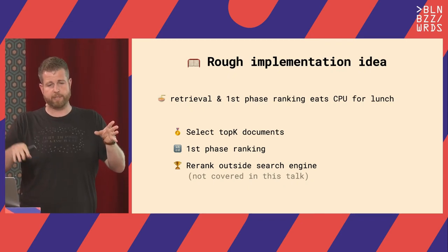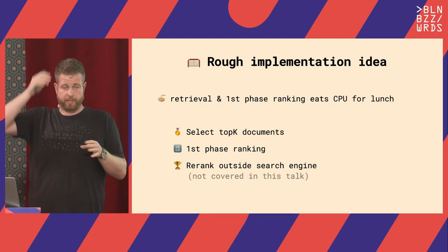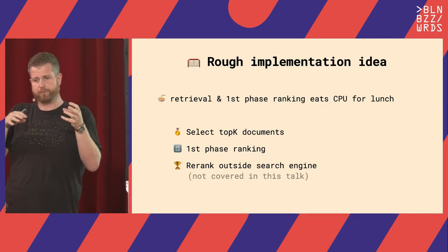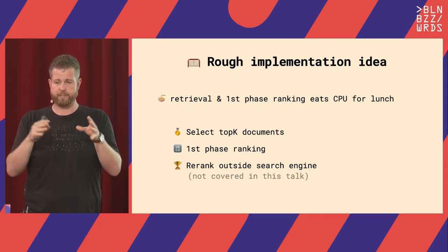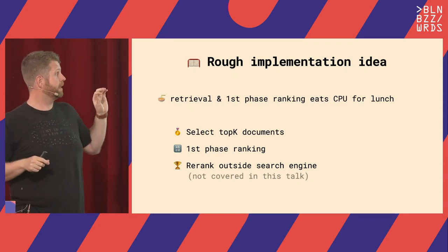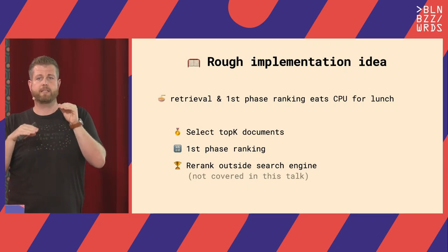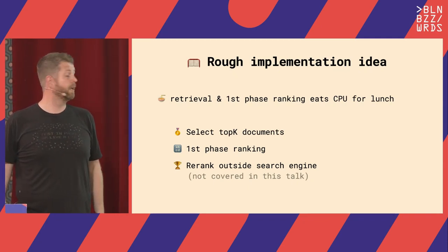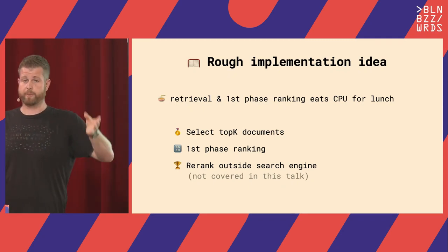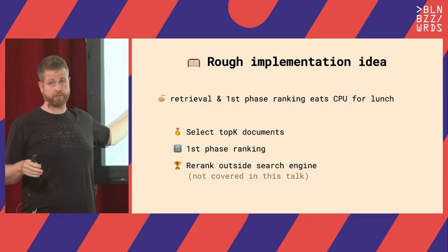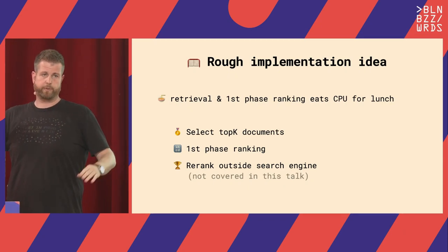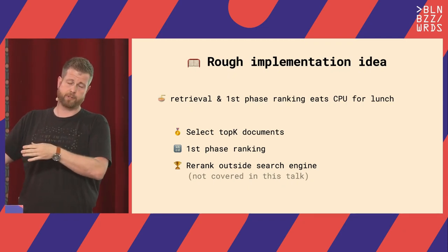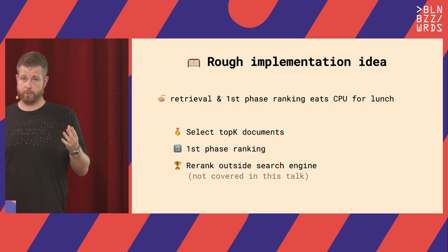Especially in a sharded environment, you don't really know what shard is utilized by how much. The AWS load balancer can easily distribute evenly, but the internal Solr distribution is something we had to look into a couple of times. The implementation idea was: if we know that a 60K result size is about the sweet spot that ends up at those 400 milliseconds, then why not just select the top 60K documents, return them, do our first-phase ranking — a very long function query in Solr — and then take everything to a re-ranker outside of Solr. That's basically handled by another team.